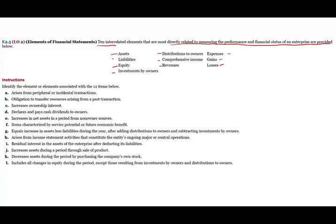Identify the element or elements associated with the 12 items below. We're going to read the statement and determine what it likely represents. A: arises from peripheral or incidental transaction. Do you know what financial elements are considered incidental or peripheral to the business? Peripheral and incidental means they are not part of the central ongoing operation. And the answer is gains and losses — those two. Gains and losses are transactions that are considered peripheral, incidental — they're not part of the central ongoing operation.